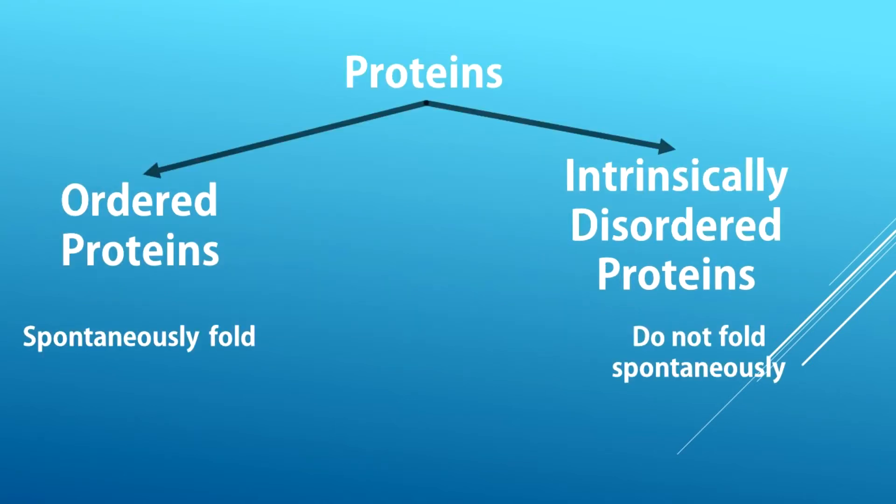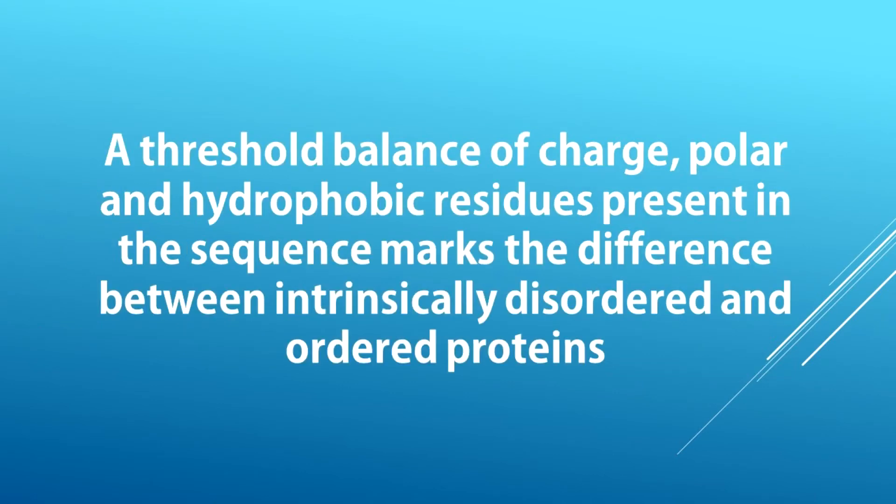So ordered and disordered, we find two different types of proteins. What marks their difference? Well, it is a threshold balance of charge, polar, and hydrophobic residues present in the sequence. This balance was discovered by Vladimir Uversky in 2000.